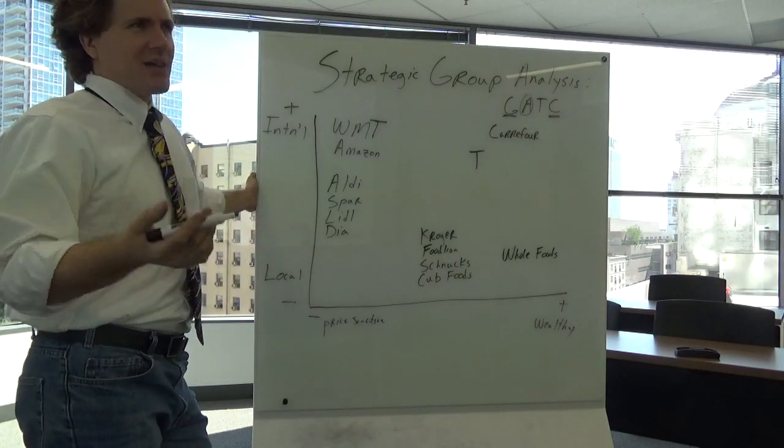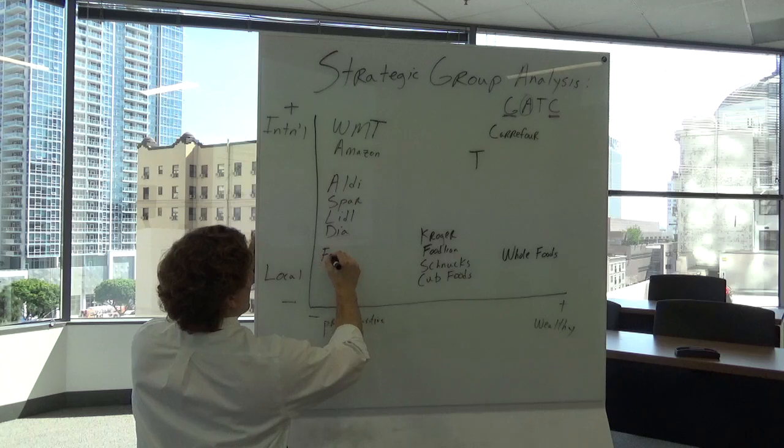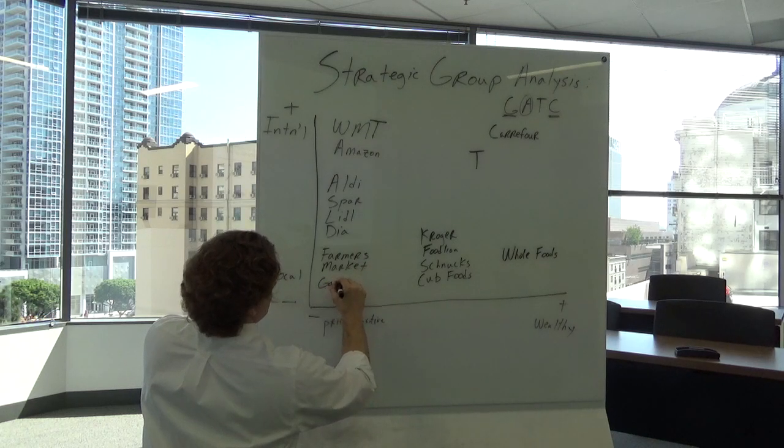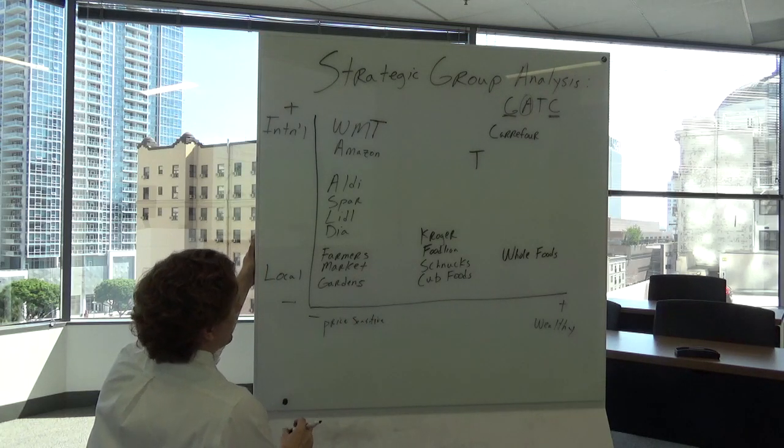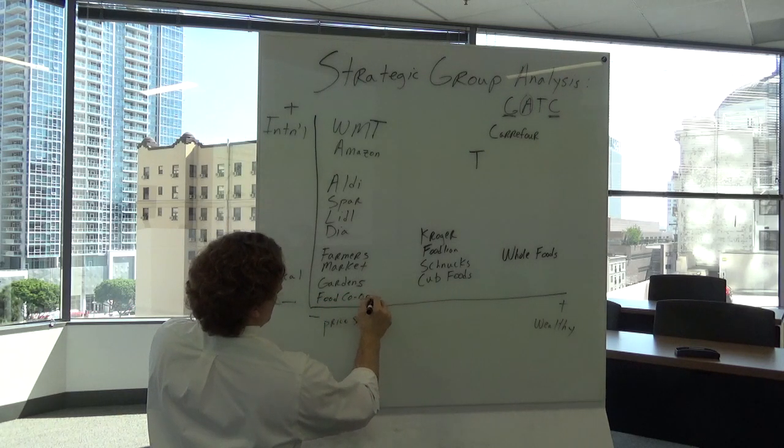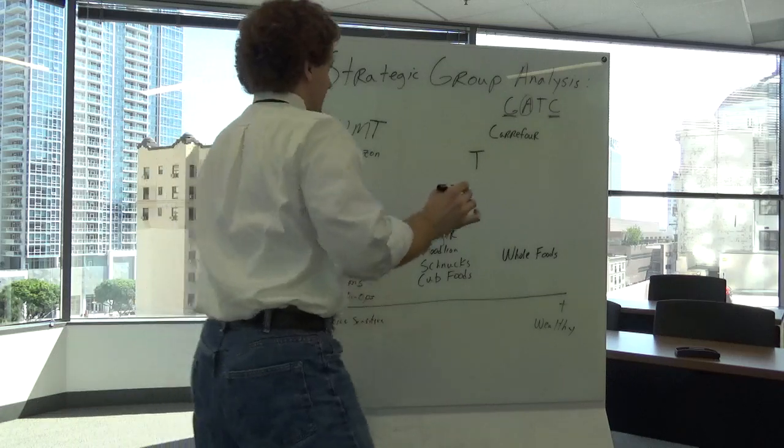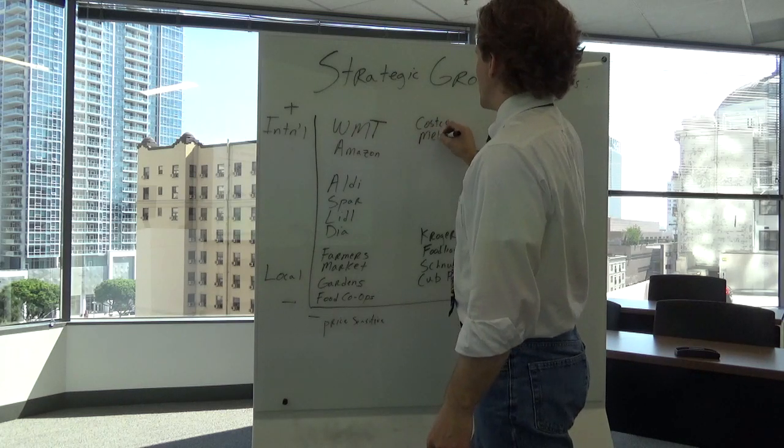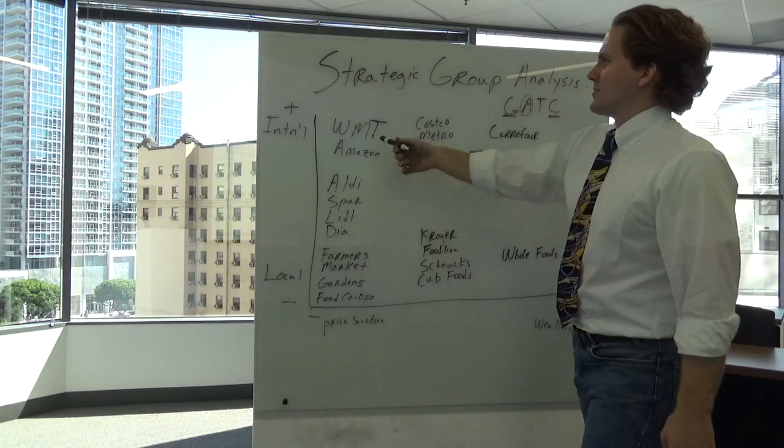And then you might consider things that aren't exactly groceries. I mean we already talked about Amazon but there might be things like a farmer's market. That's local and very price sensitive. People's personal gardens. We're looking again at people buying food. Cooperatives. Food co-ops. We've also got wholesalers. Like Costco. Metro. That's the German equivalent of a Costco. I won't put Sam's Club in here because they're part of Walmart.